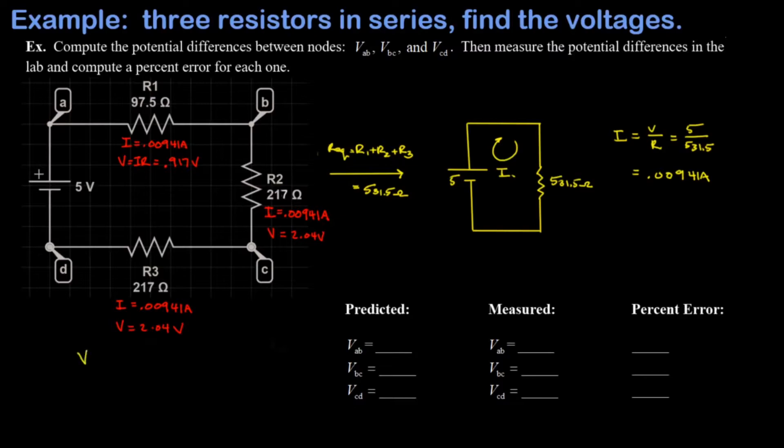But I could start at Va and I could say Va minus, because the current is going this way through R1, I must have a voltage drop across it, so minus 0.917 volts equals Vb. And then I could say that means Va minus Vb is 0.917 volts, Va being the higher voltage. So that's what we mean by this shorthand notation of just writing Vab.